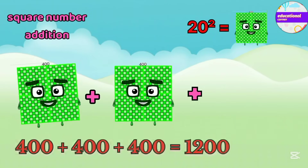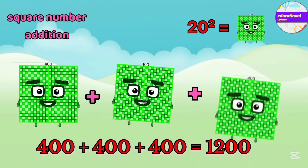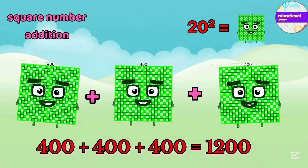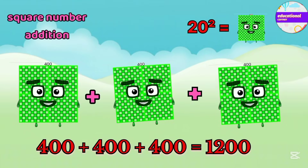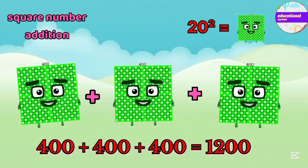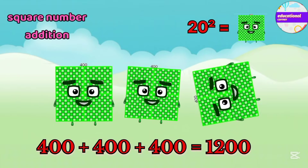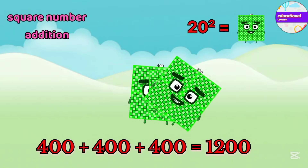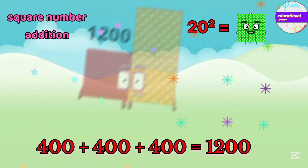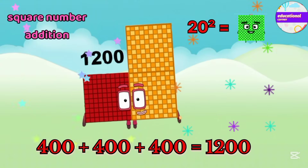The square of 20 is 400. If we add 400 three times, the answer is 1200.